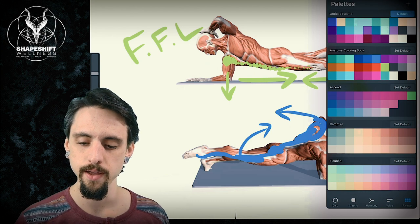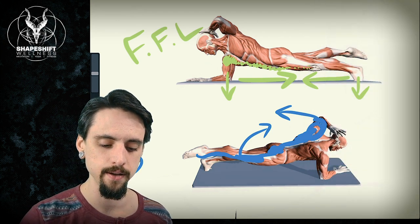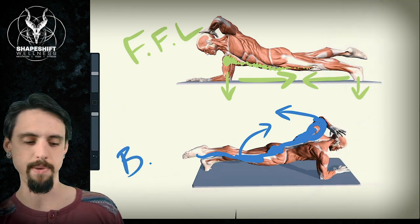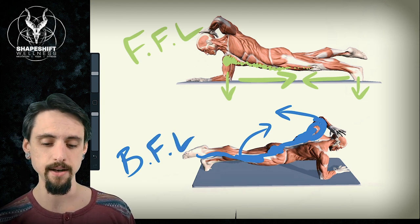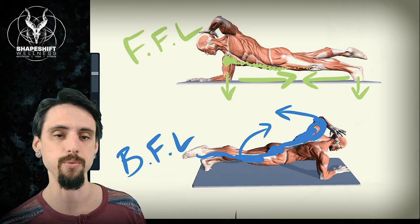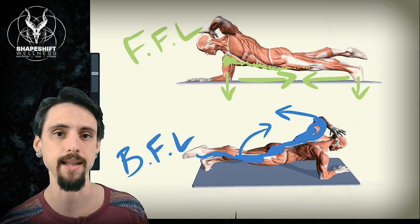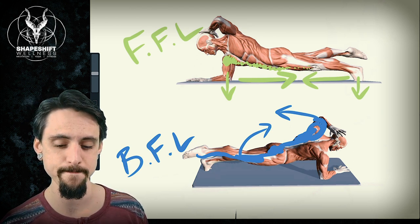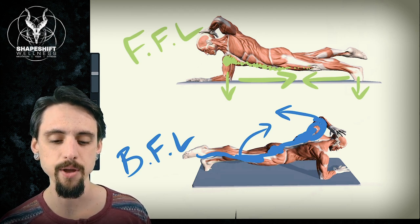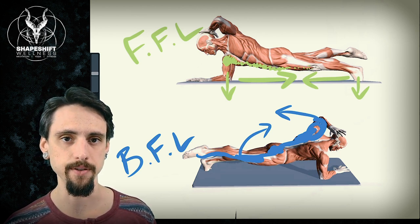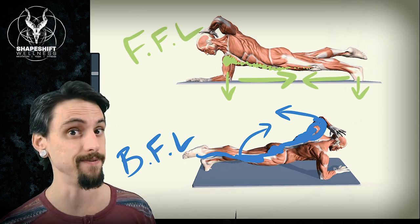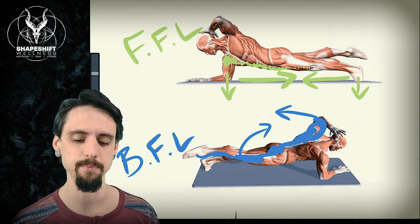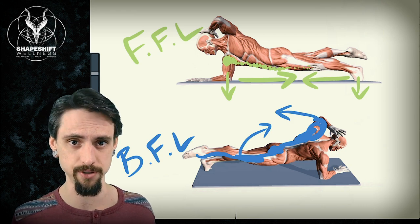Meanwhile, the back functional line on the opposite side is drawing the left shoulder back and the right hip up and the right leg up. So you can see how they work together synchronously, harmoniously, beautifully in order to accomplish this one very difficult task. But this is the case in any rotational task.